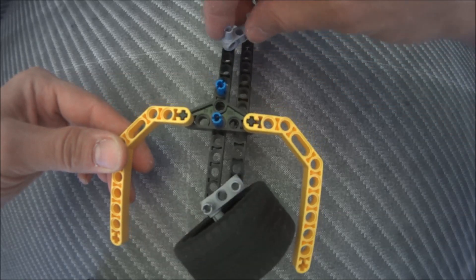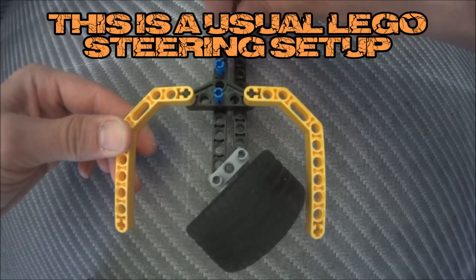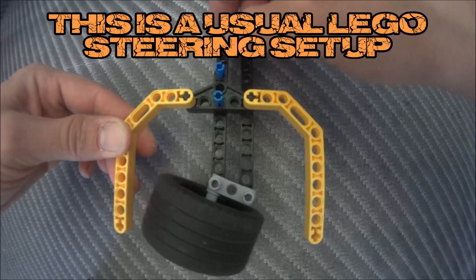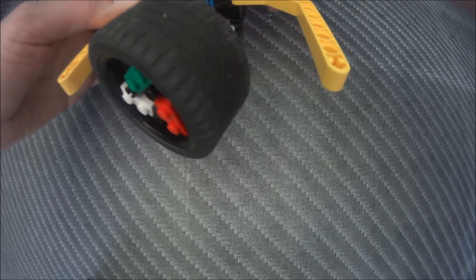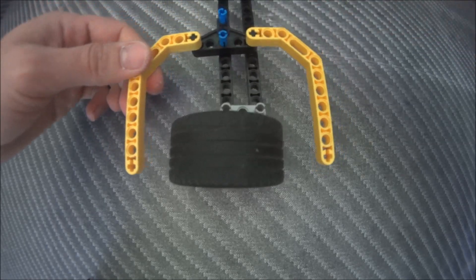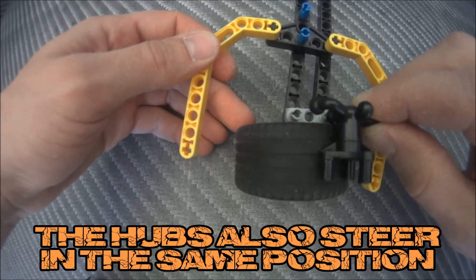So here are a few examples. First, the yellow example here is the usual example LEGO uses. The wheel point, as you can see, is far outside the wheel and you need a lot of space to turn the wheel.